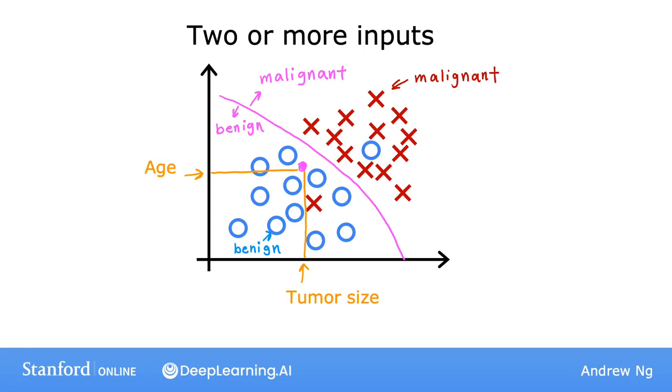From this example, we've seen how two inputs, the patient's age and tumor size, can be used. In other machine learning problems, often many more input values are required. My friends who worked on breast cancer detection used many additional inputs, like the thickness of the tumor clump, uniformity of the cell size, uniformity of the cell shape, and so on.